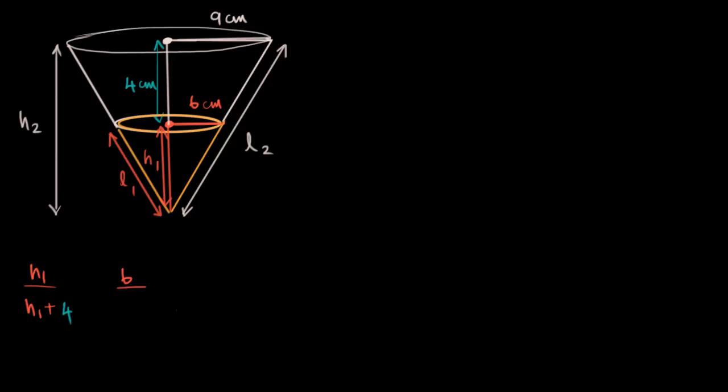That's this side by this side and that should be proportional to 6 by 9. Now we have one equation, one variable. This is solvable. So let's do that. So I'm going to cross multiply 9 into h1 equals 6 into h1 plus 6 into 4. That's 24. Now I know this is 3h1. This is 24 on this side. So 24 by 3 is 8. So I have my h1. h1 equals 8 centimeters.